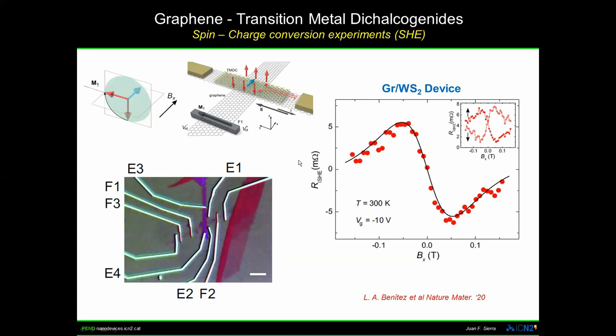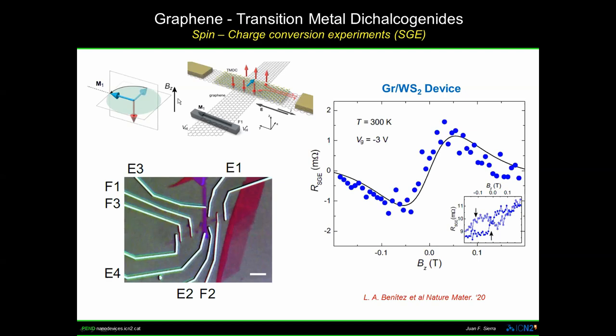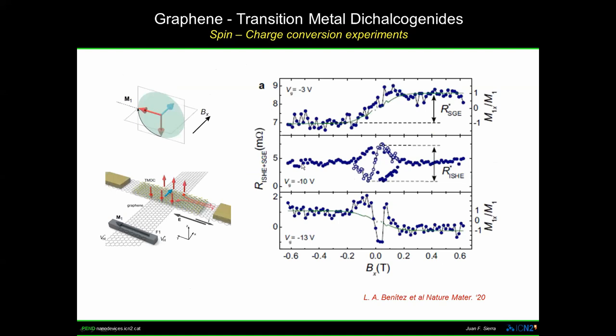We also did the complementary configuration: applying the magnetic field out of plane, so only spins arising from the spin galvanic effect experience precession. Again we inject spins, they start to precess, and we see the same oscillatory behavior — but this signal arises from the spin galvanic effect, because spins pointing out of plane from the spin Hall effect do not experience precession in this configuration. You can also be sensitive to the spin galvanic effect using a configuration where you fully saturate the ferromagnet along the spin channel direction.